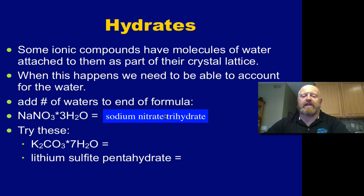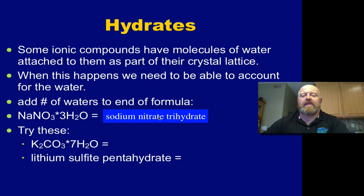If you had the name, you'd work backwards from that. So if you saw sodium nitrate trihydrate, you would do all your same rules for figuring out the formula for sodium nitrate, and at the end of it you would just put the multiplication sign and then three waters with it. That's all you have to do.